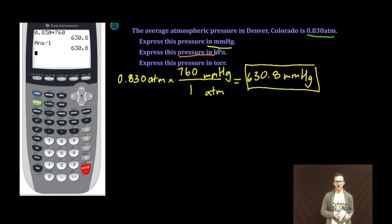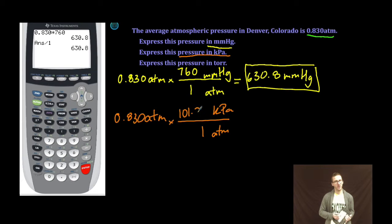Next, let's express the pressure in kilopascals. Again, starting with the known amount, 0.830 atmospheres. Converting from atmospheres to kilopascals, one atmosphere is 101.3 kilopascals. Equals 84.079 kilopascals. Boom.